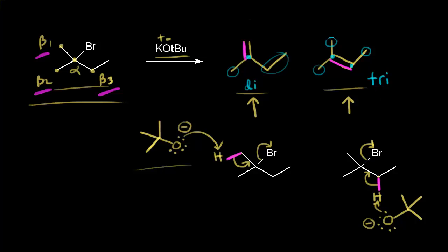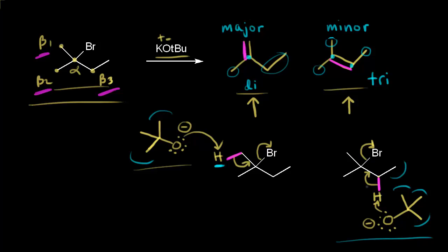This time, the disubstituted alkene turns out to be the major product, and the trisubstituted alkene is the minor product. We explain this by the fact that potassium tert-butoxide is a sterically hindered base. For beta one or beta two, the base can be out to the side and relatively out of the way, so it's easy to take those protons. But at the beta three position there's more steric hindrance, preventing the base from taking that proton as easily. That's why the trisubstituted product is the minor product with a sterically hindered base. The major product is the less-substituted alkene — we call this the Hoffman product.